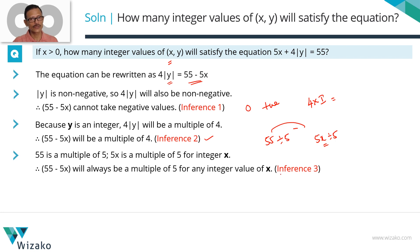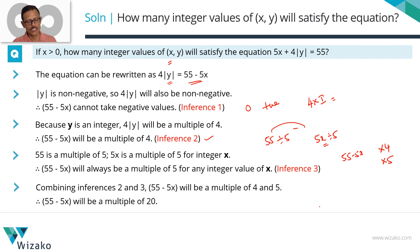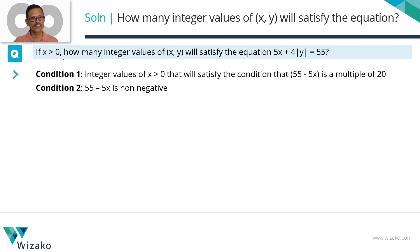Let's take inference 2 and 3 together. From inference 2, we know that 55 - 5x is a multiple of 4. From inference 3, for integer values of x, 55 - 5x is a multiple of 5. So 55 - 5x is a multiple of 4 and a multiple of 5. Then it obviously boils down to the fact that it's a common multiple of 4 and 5 or it's a multiple of 20. Let's put down the following conditions that x and y should satisfy. First, x is positive given in the question. Second, integer values for x and y that we are looking for should satisfy the condition that 55 - 5x is a multiple of 20.